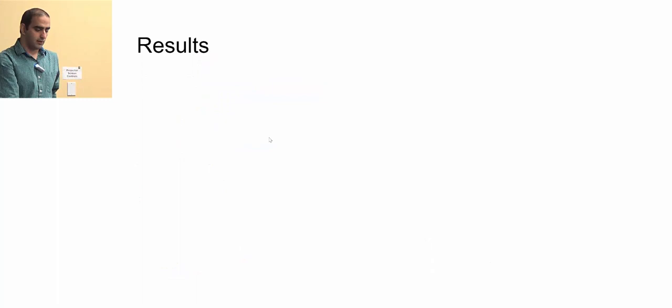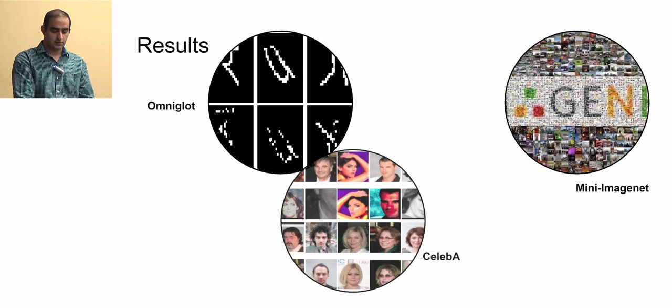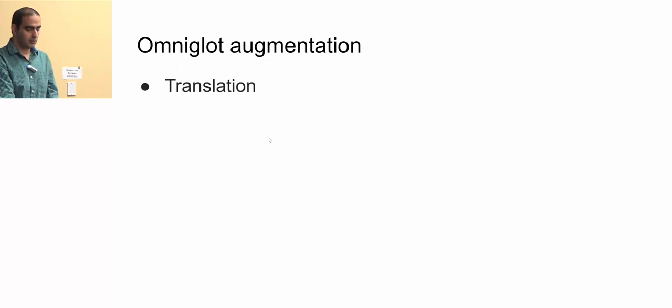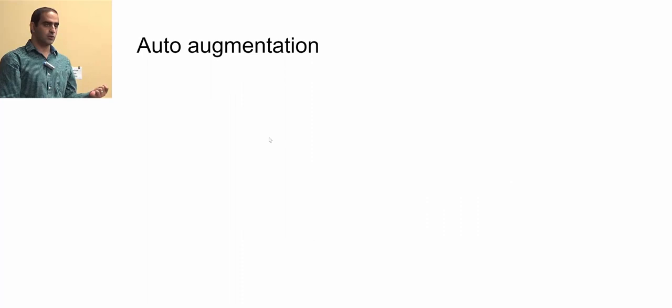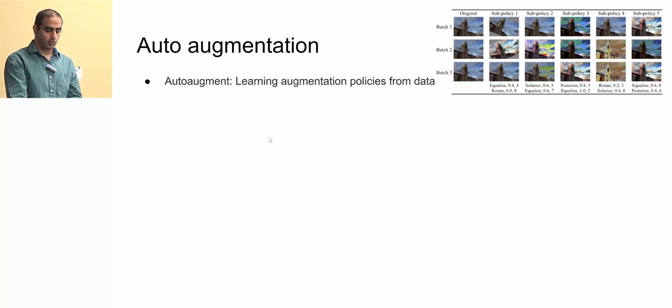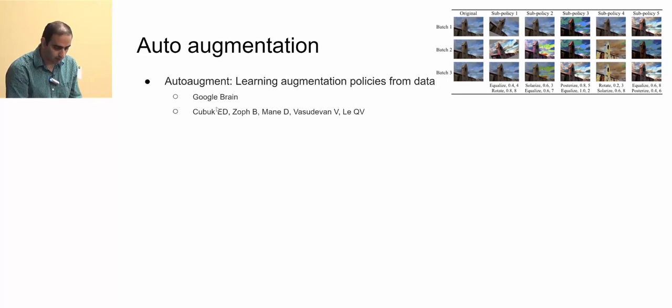We evaluate UMTRA on Omniglot, Mini ImageNet, CelebA, and UCF101. For Omniglot, the augmentation uses translation and pixel dropping. Another choice is Auto-Augment — a method from Google Brain that learns augmentation policies using reinforcement learning.